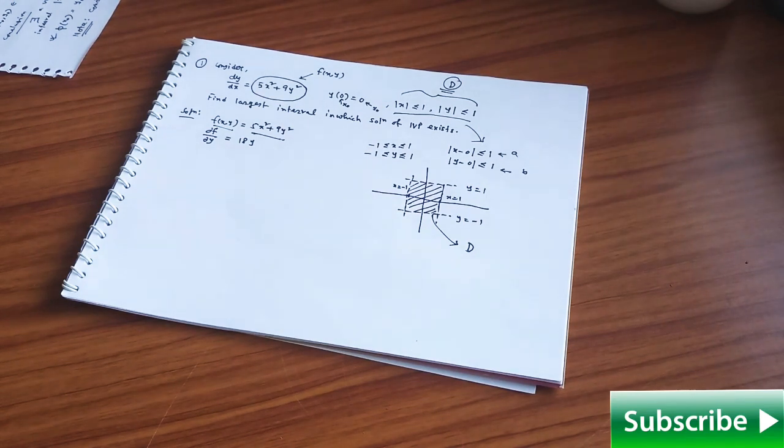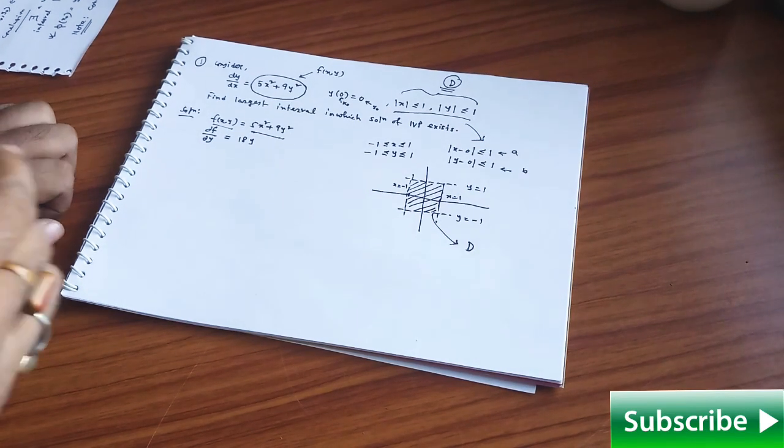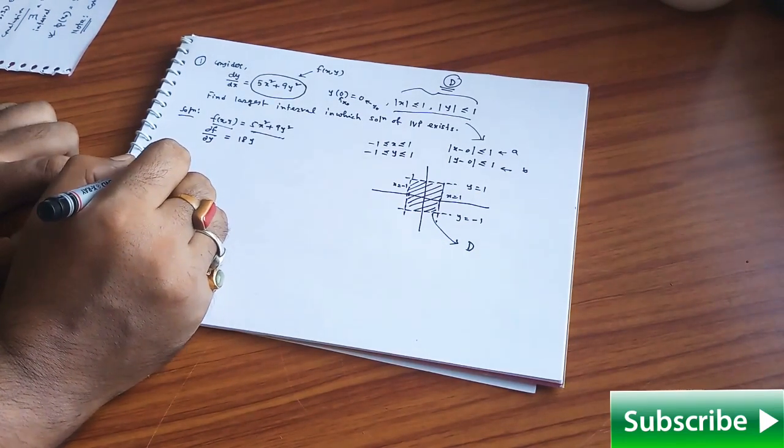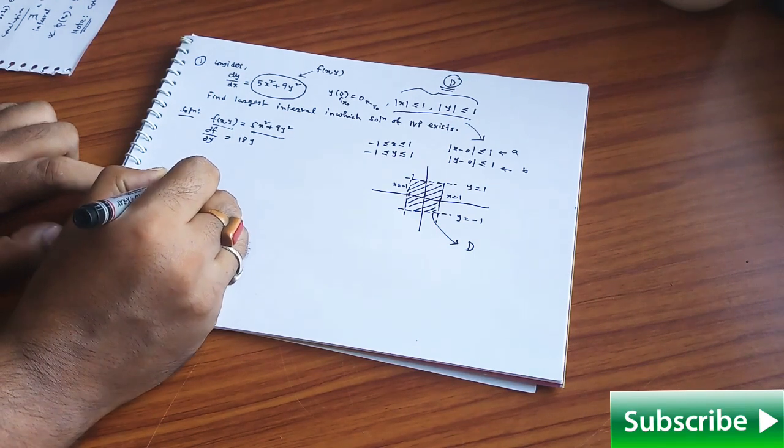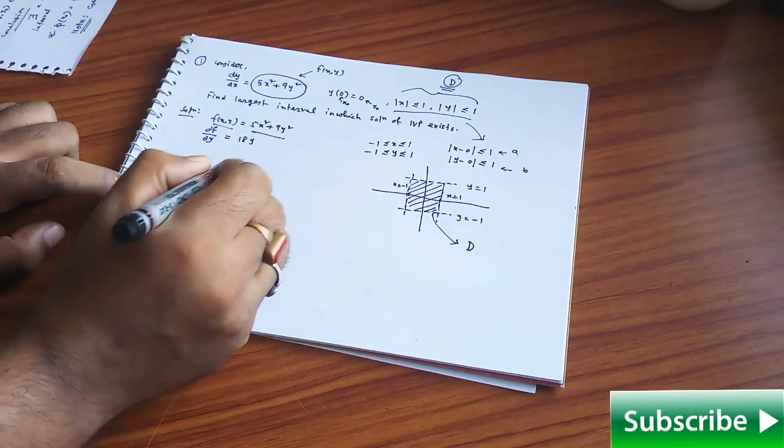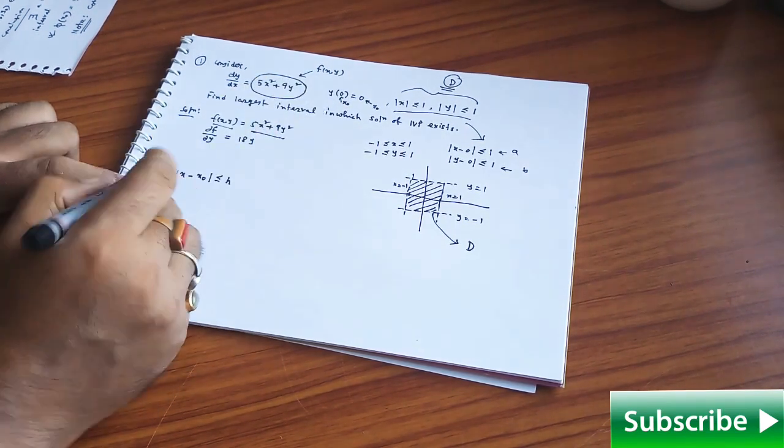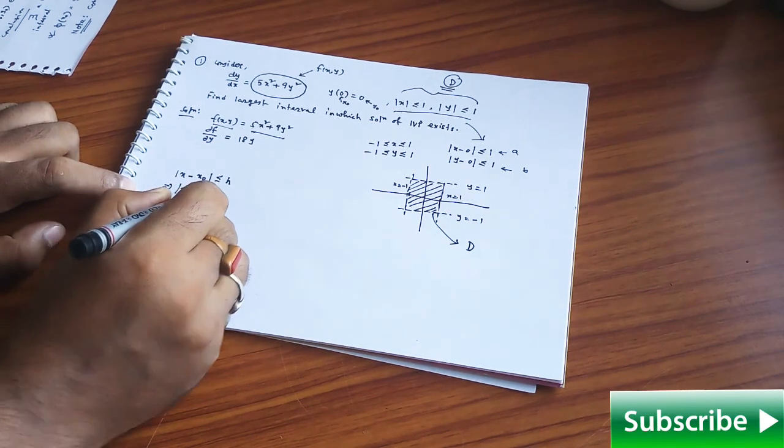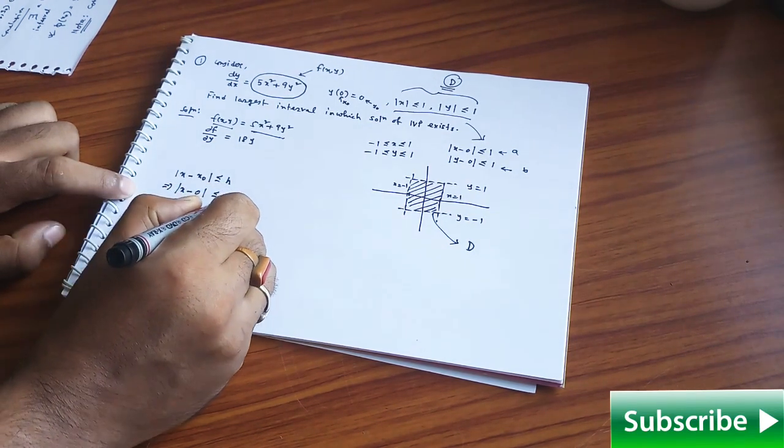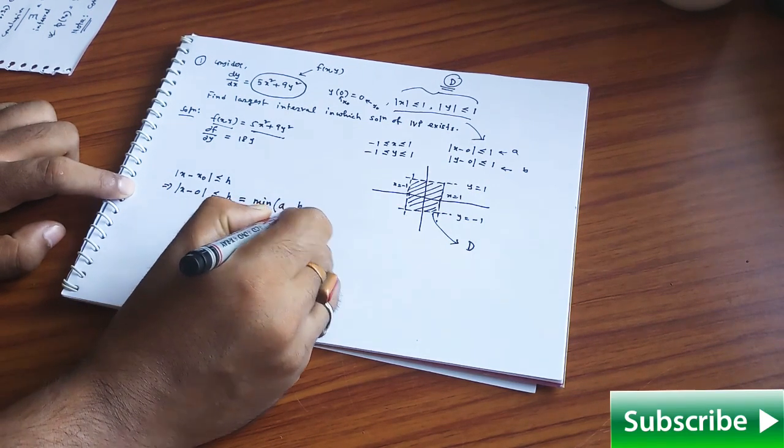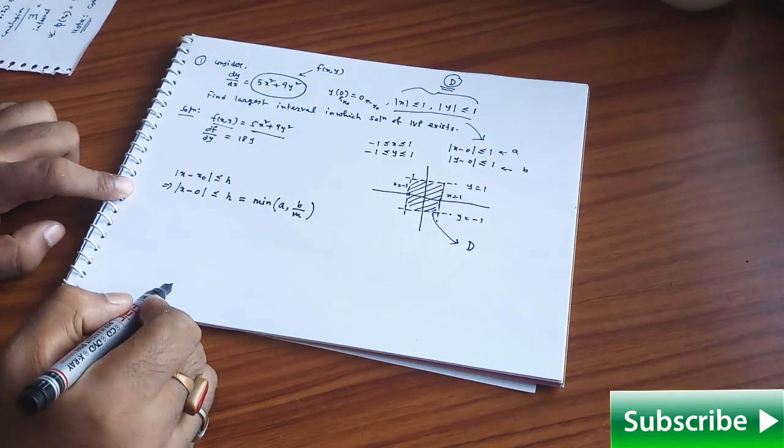In this problem they are asking what will be the largest interval in which the solution of the initial value problem exists. For that purpose in that given formula you have |x - x₀| ≤ h, here look at your x₀ is nothing but 0. It is |x - 0| ≤ h and h means minimum of a comma b by m.